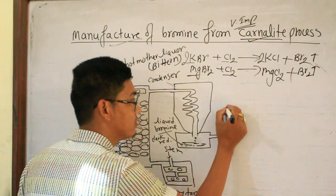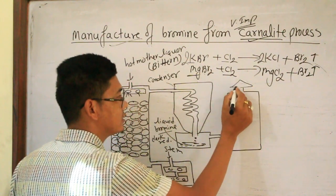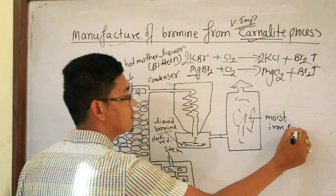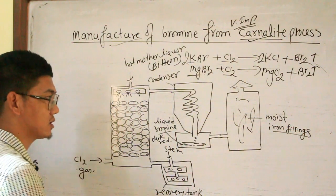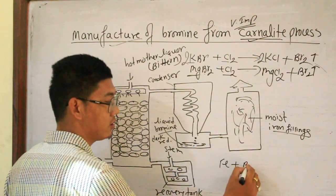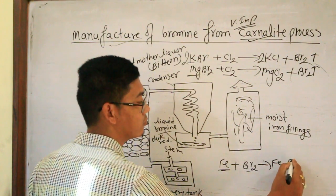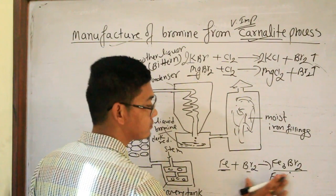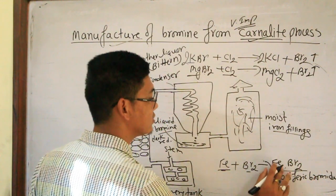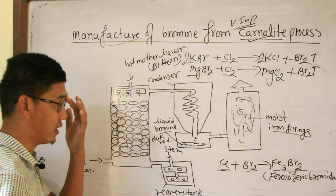It is not necessary that all bromine vapours are condensed. Uncondensed bromine vapours move towards another chamber which consists of moist iron fillings. Iron combines with bromine to form ferroso-ferric bromide, Fe₃Br₈.